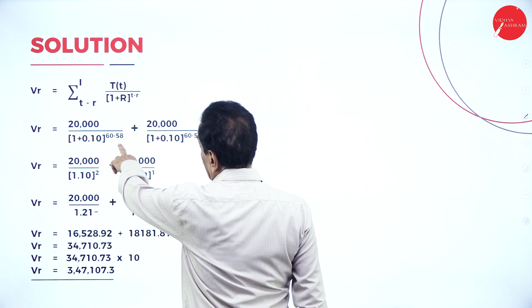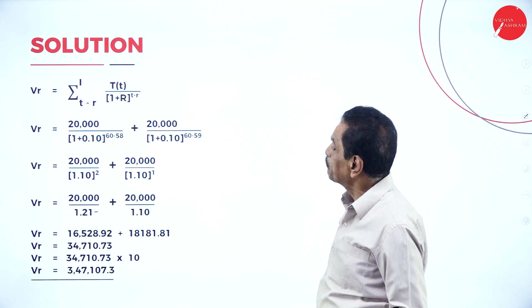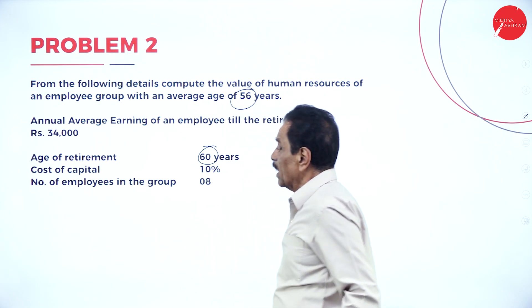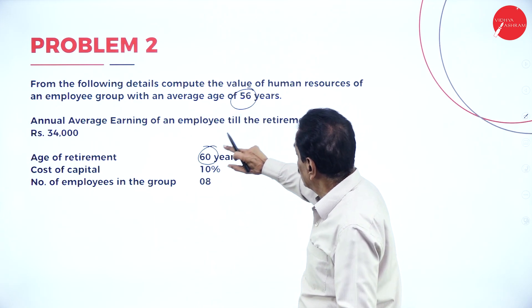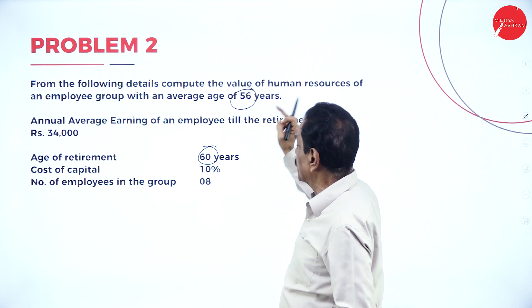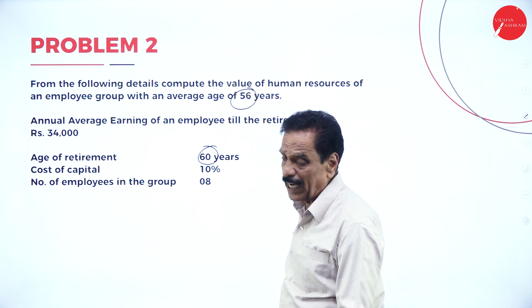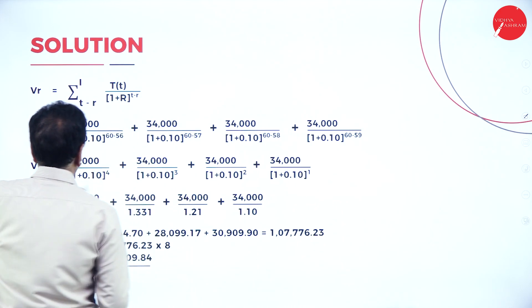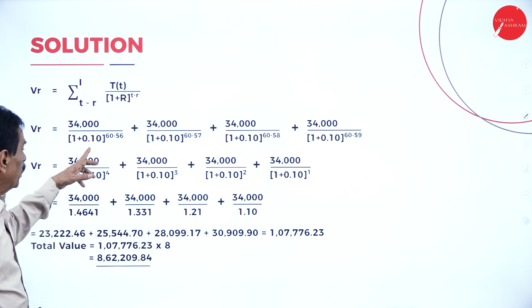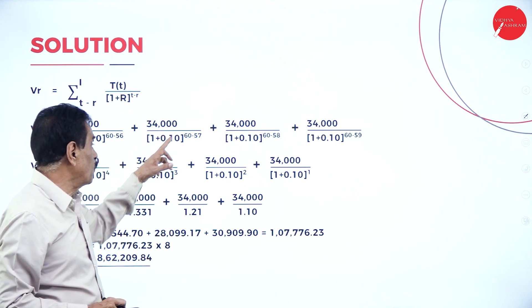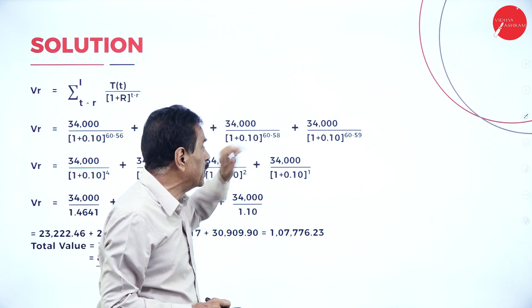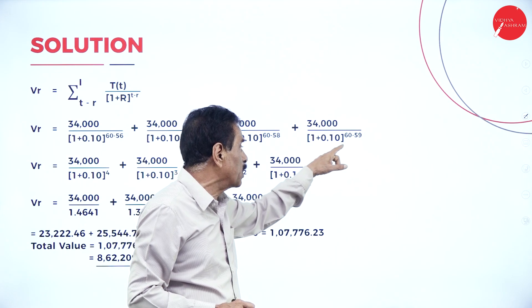For the second problem: average age is 56 years, retirement age is 60 years, discount rate is 10%. The powers are calculated as 60 minus 56, 60 minus 57, 60 minus 58, and 60 minus 59, giving powers of 4, 3, 2, and 1 respectively. The average salary here is 34,000.